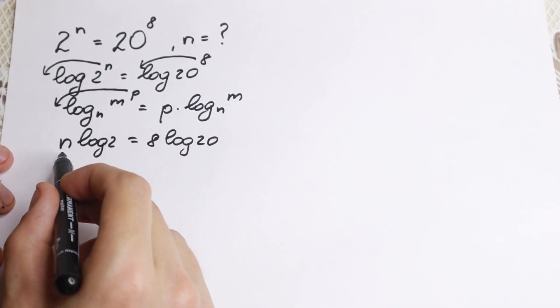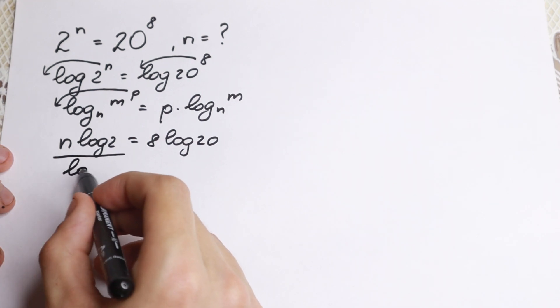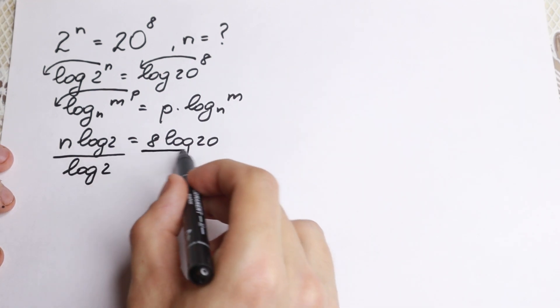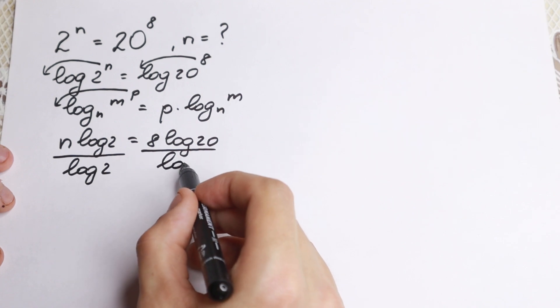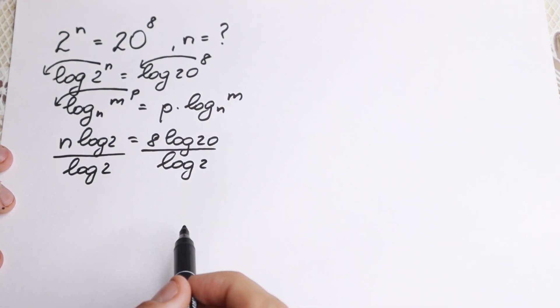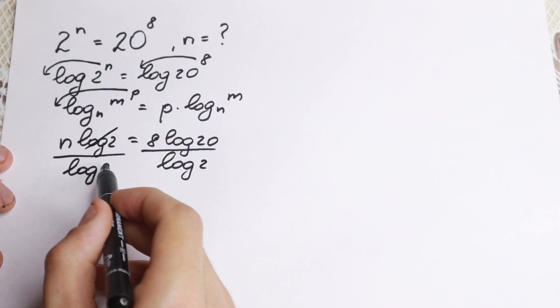So let's divide both sides by this log 2, so we have log 2 right here and nothing change, so I write it right here log 2. Okay, what are we going to do next? From here we can easily cancel this.